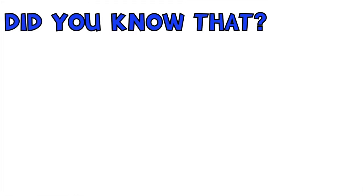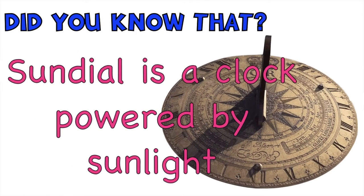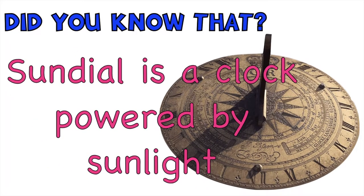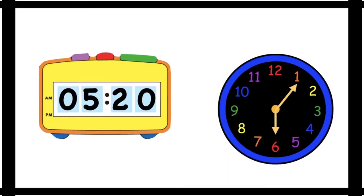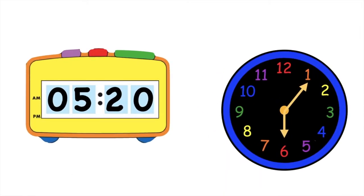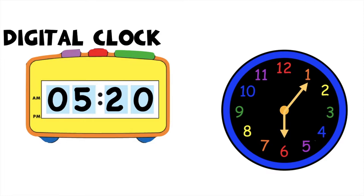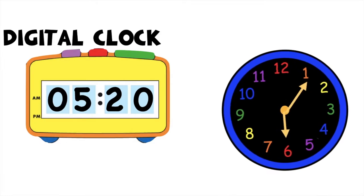Did you know that a sundial is a clock powered by sunlight? Take a look at these two clocks. How are they different from each other? What time is it on the clock on the left side? How about the time on the right side? A clock tells time. The clock on the left side is what we call the digital clock, while the clock on the right side is what we call the analog clock.